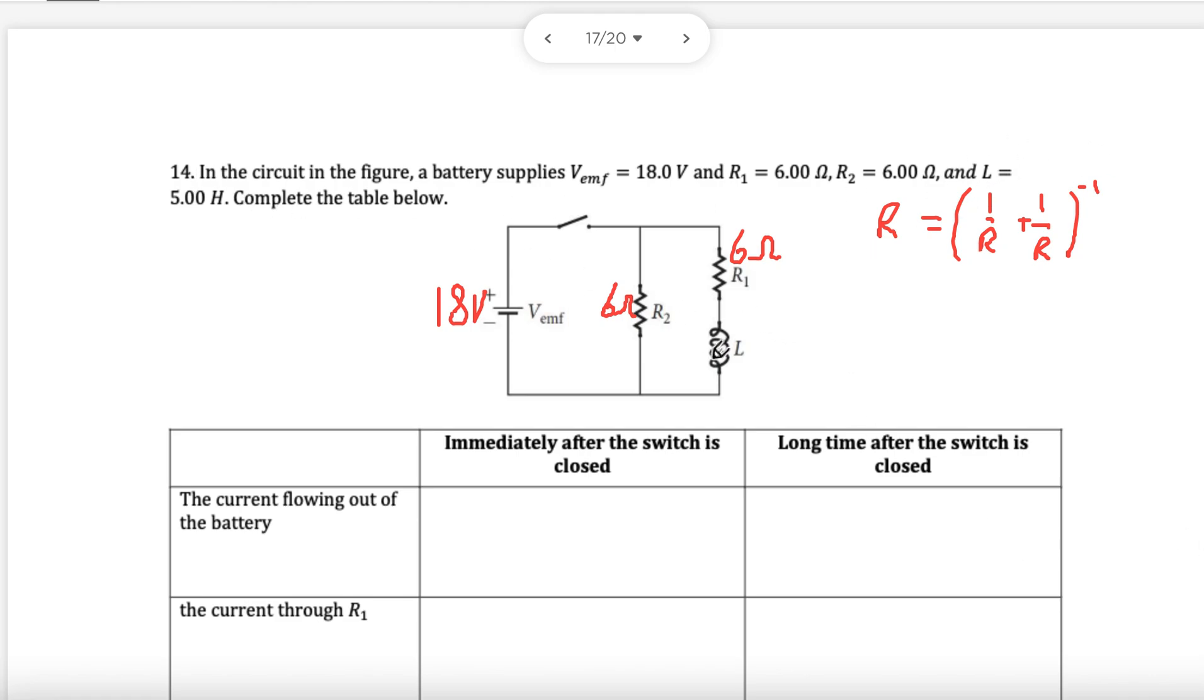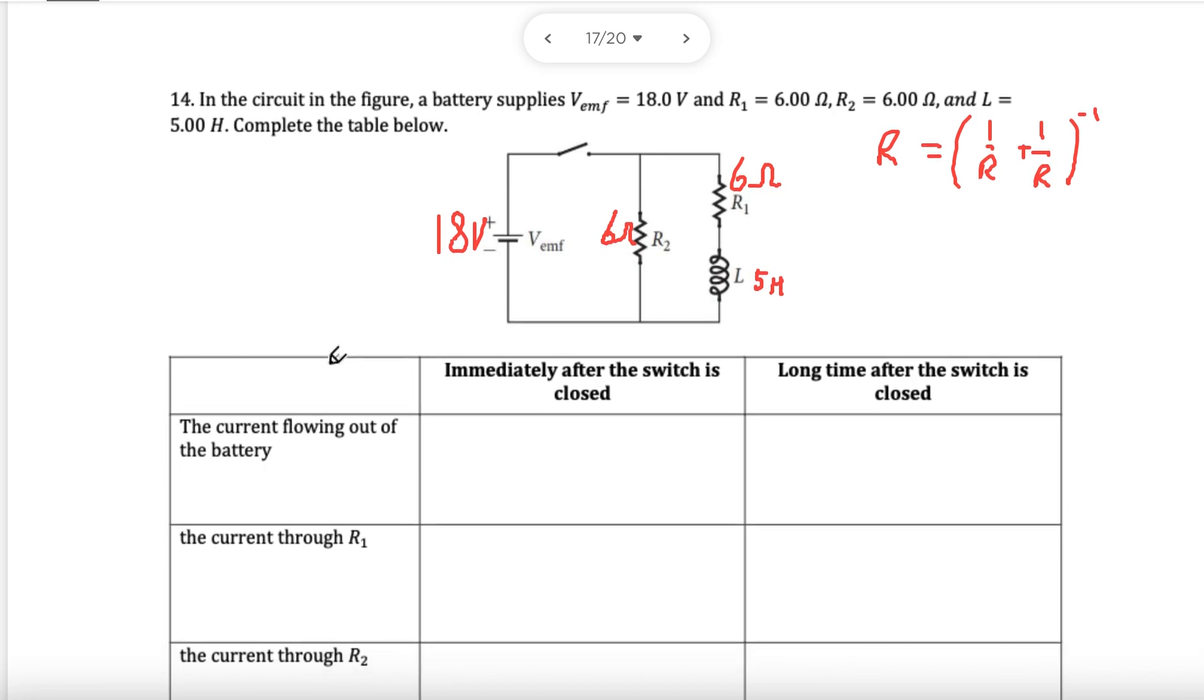The L here, the inductor, is 5 henrys. That will be important at some point. Let's see what happens now.